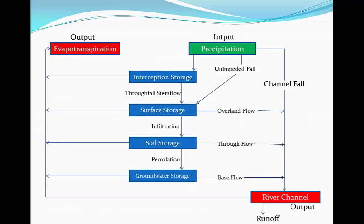So I've drawn a diagram here on what it should be. So we have our inputs and outputs. The input is precipitation and that can either fall as unimpeded fall or as channel fall. Channel fall can then leave as runoff or leave through evapotranspiration. Then we have the different storages that it could fall into once the actual precipitation falls into the interception storage, which is vegetation pretty much.